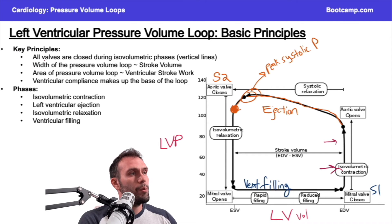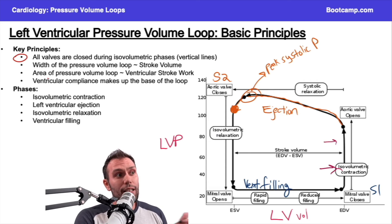A couple of key principles here: All valves are closed during isovolumetric phases. Normally, that's what we would expect to happen. That's why we get straight lines. Now, if we didn't have all the valves closed, if we had a regurgitation or a leaky valve, so to speak, we wouldn't necessarily have straight lines.